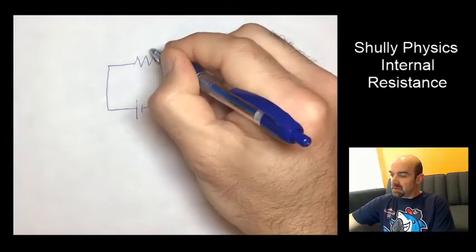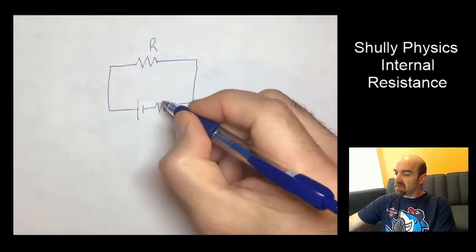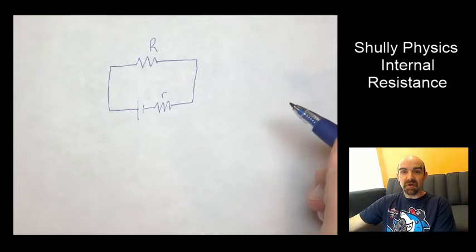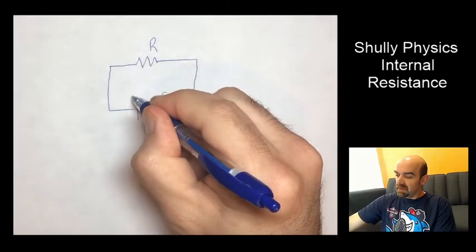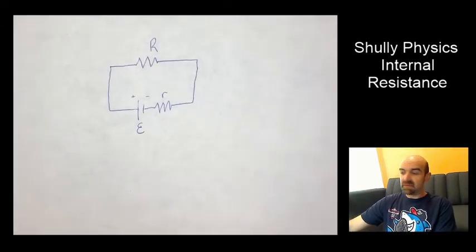There's a load resistance. I'll call it capital R in the circuit. There's an internal resistance. I'll call this lowercase r, and the EMF, represented by an epsilon.